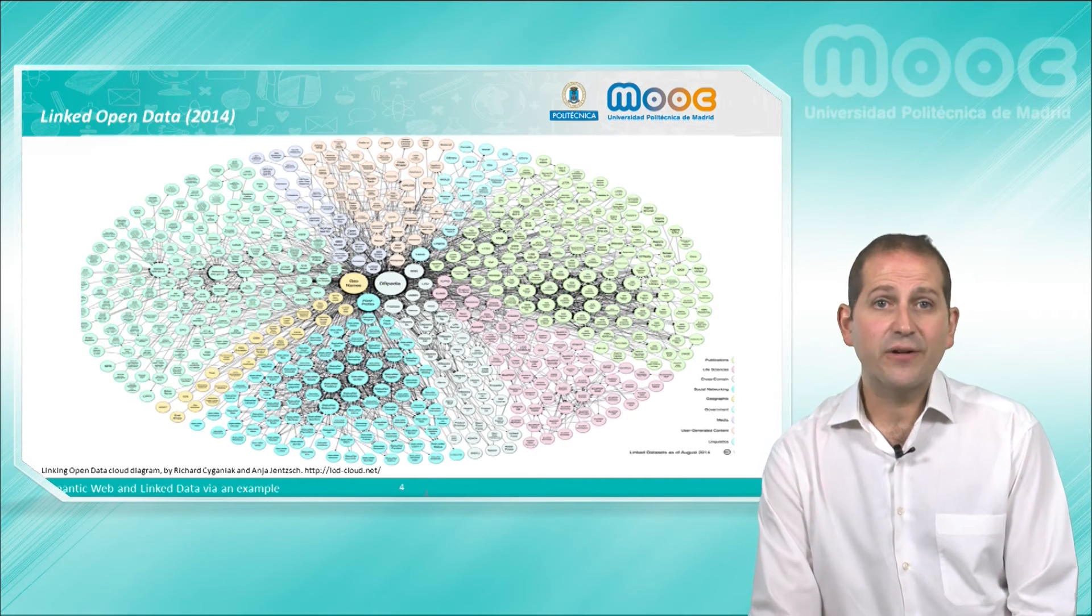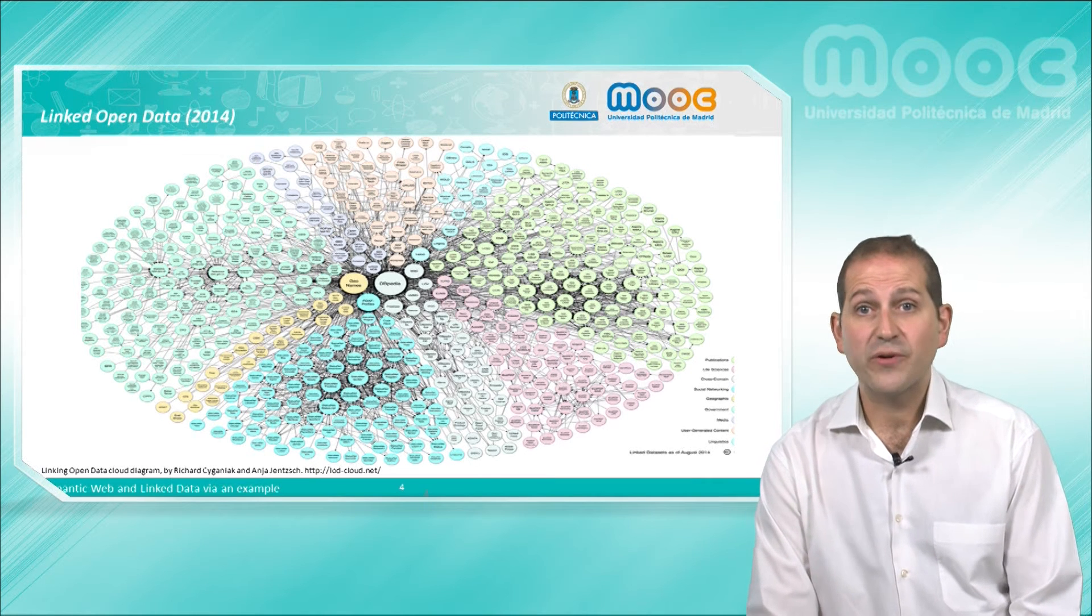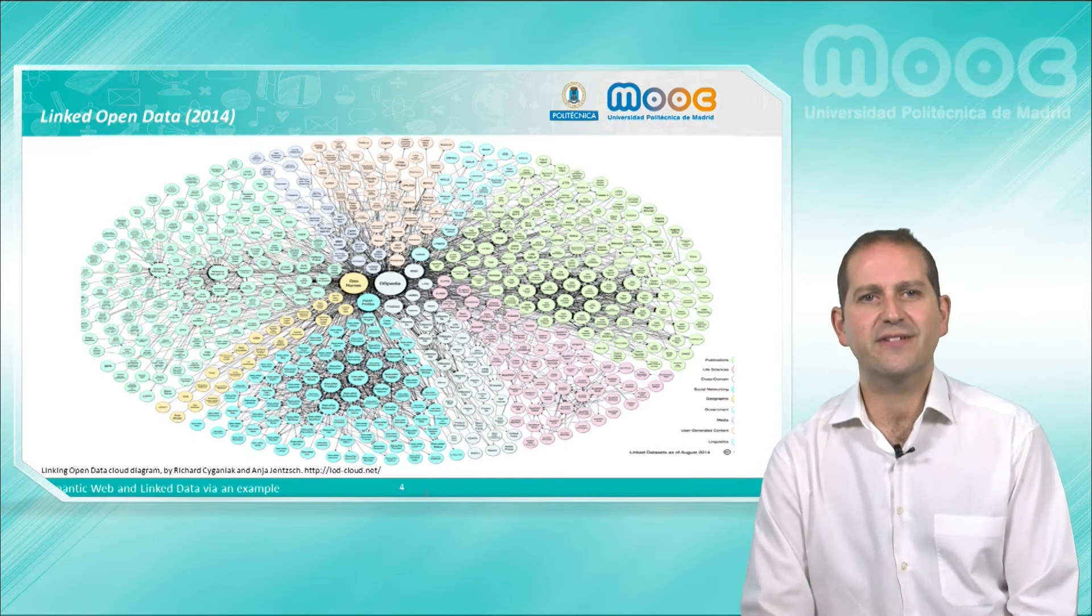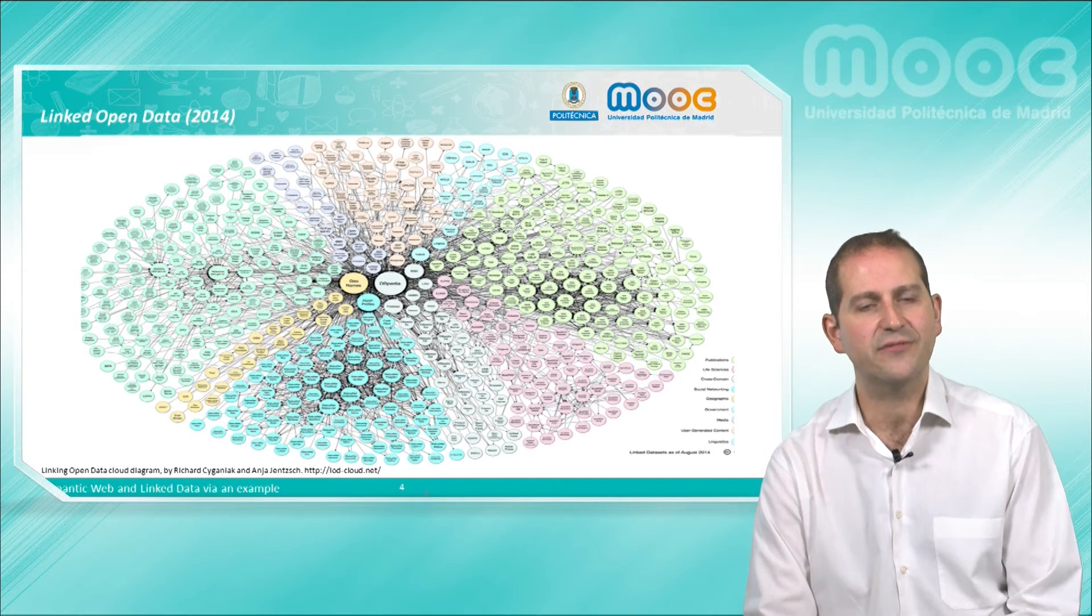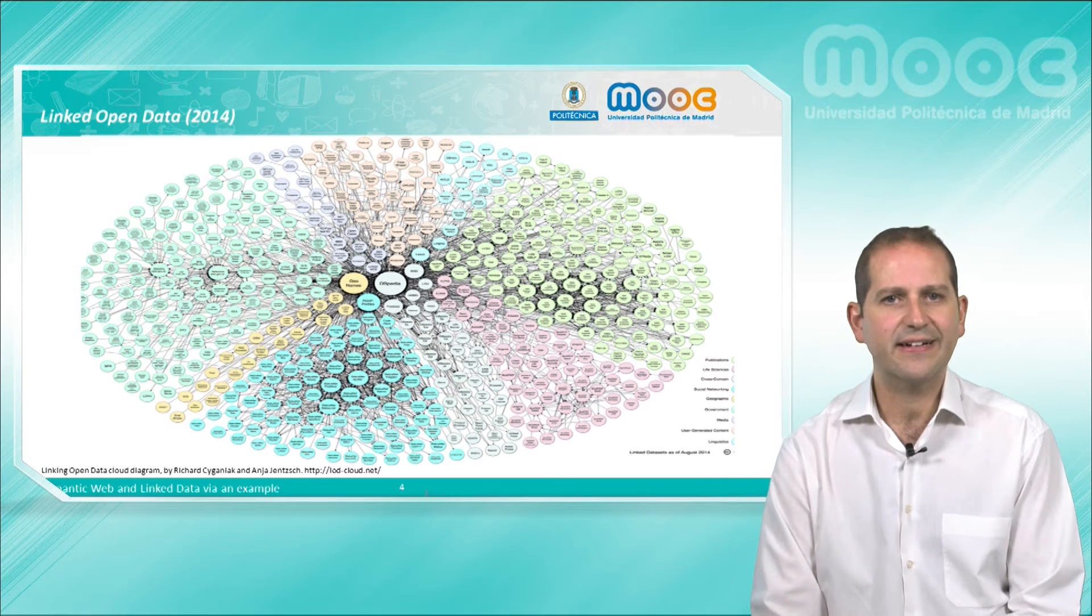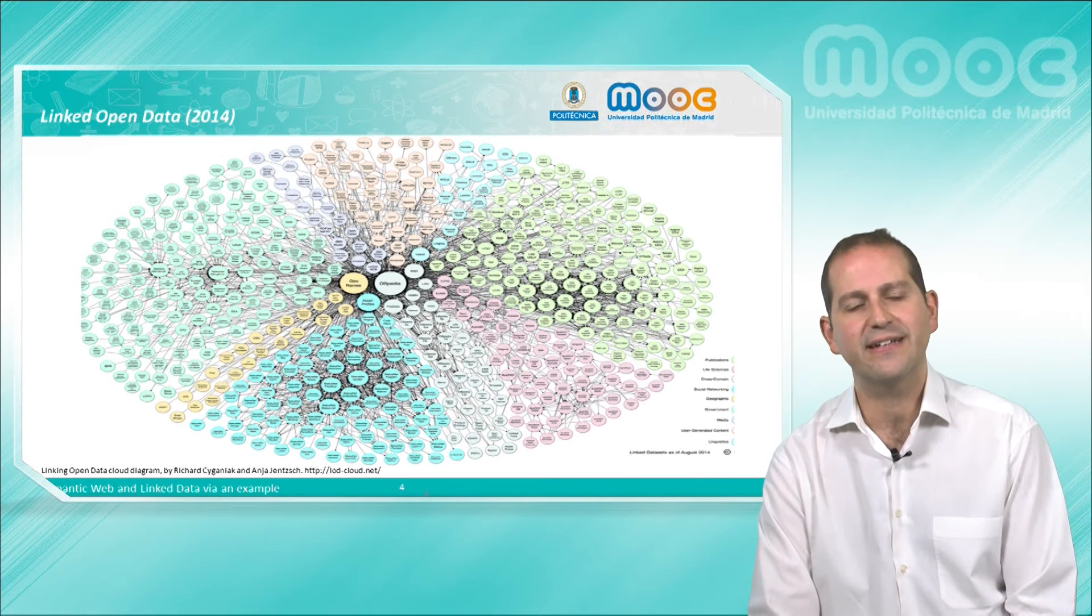As we can see, slowly after 2009 the cloud started growing more quickly, and two clear centers were created: DBpedia and Geonames, as they are used by many of the published datasets as the target of their links, since they provide generic encyclopedic and geographical data respectively.